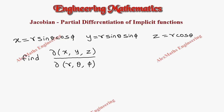Hi students, this is Alex. In this video we are going to find the partial differentiation of the implicit function using the Jacobian method, where x is given as r sin θ cos φ, y is r sin θ sin φ, and z is r cos θ.